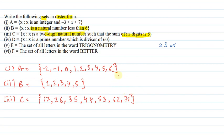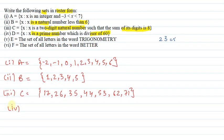In the fourth part, we have set D such that x is a prime number which is a divisor of 60. In this question we have said that x is a prime number and divisor is 60. So if we make the factors of 60, what will we have?